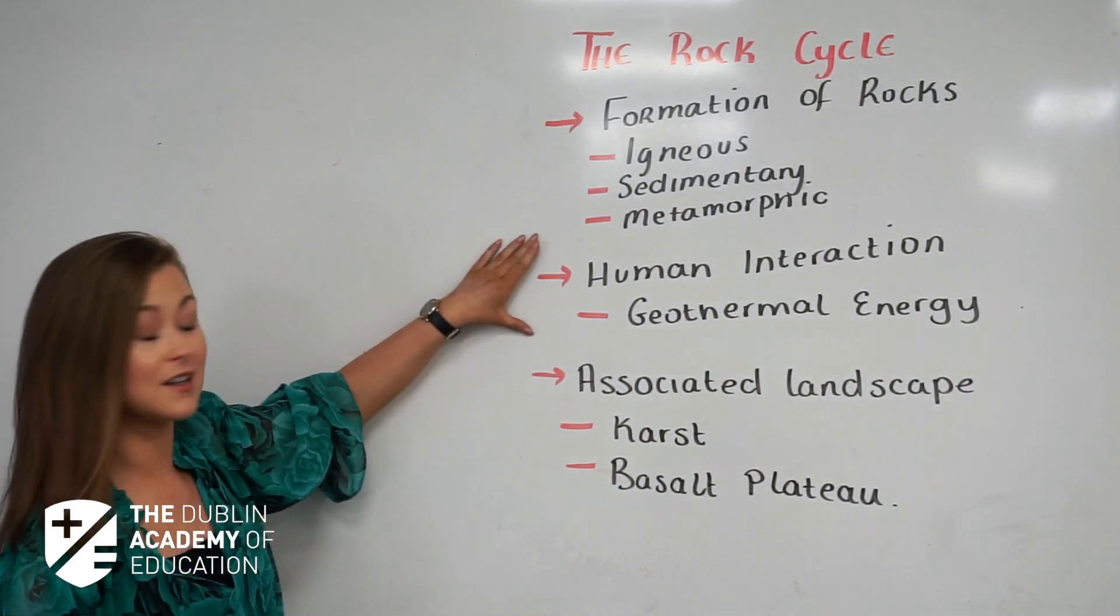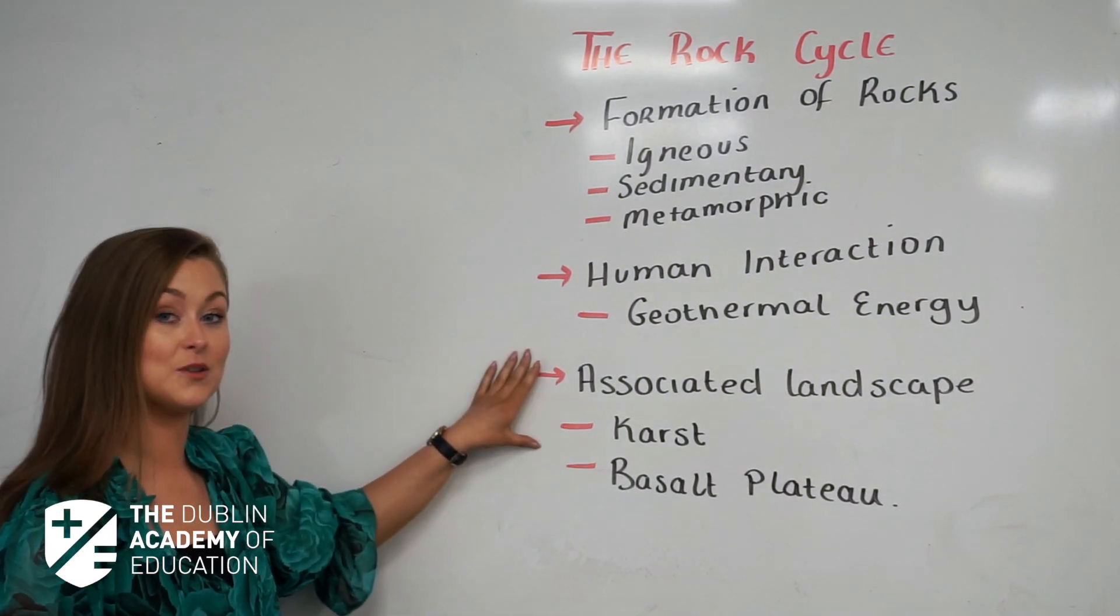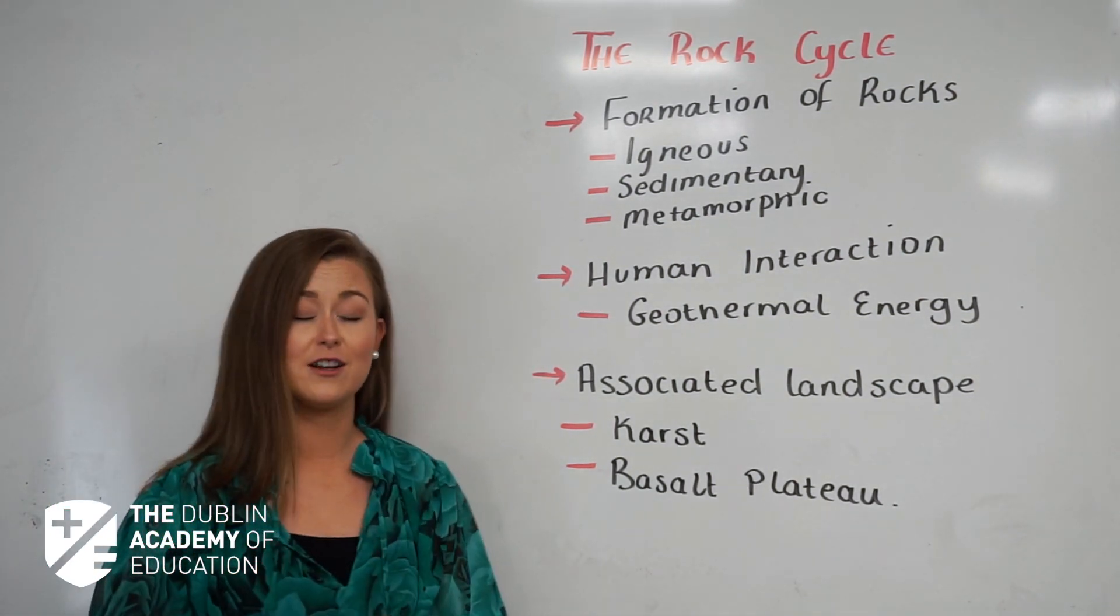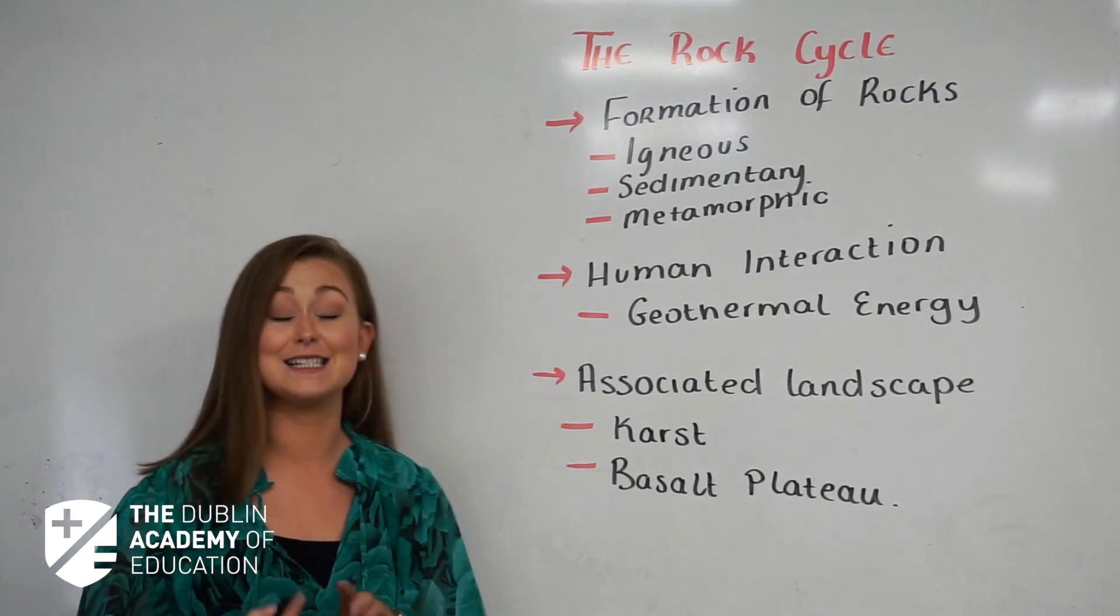human interaction with the rock cycle, and finally landforms associated with the rock cycle. Now really what that means to you if you're sitting in your Leaving Cert is that you have six S's that you need to know.